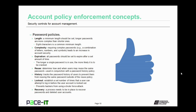Which brings us to a reuse policy: determine how and when users may reuse the same password. A reuse policy is used in conjunction with a password history policy. The history policy tracks the password history of users to prevent them from reusing the same password outside of the reuse policy. There should also be a lockout policy in place — this establishes a set number of times a user can attempt to log in before the account is locked out and requires an administrator to undo the lockout. Lockout policies help prevent hackers from using a brute force attack. Finally, recovery policies: a process needs to be put in place to recover lost or forgotten passwords and to recover deleted user accounts.